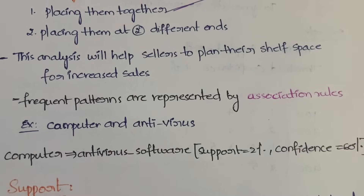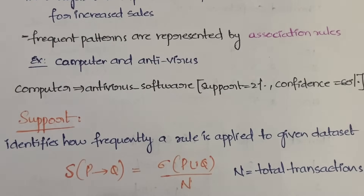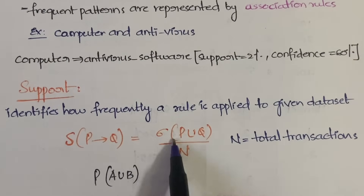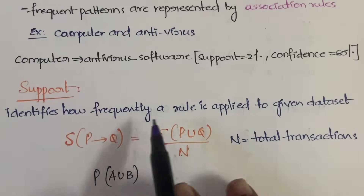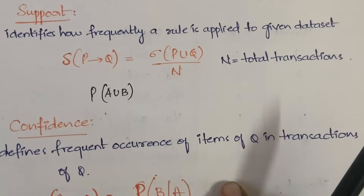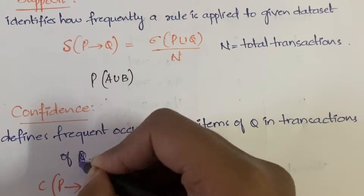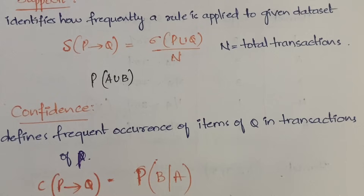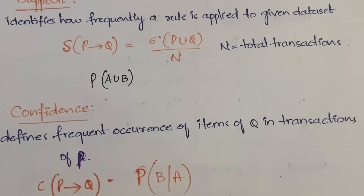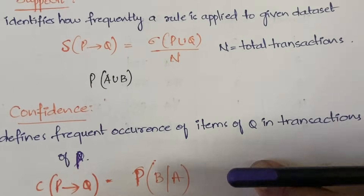Support identifies how frequently a rule is applied to a given dataset. It is denoted as: support of P → Q = σ(P ∪ Q) / N, where N is the total number of transactions, or equivalently P(A ∪ B). Confidence defines the frequent occurrence of items Q in transactions containing P. Confidence of P → Q = P(B|A) — the probability of B occurring given A has already occurred, like conditional probability.